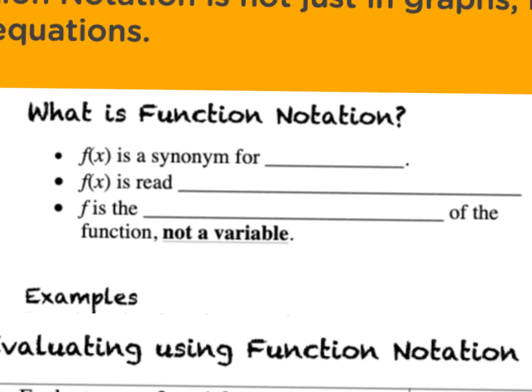F of X is another way of saying Y. A lot of the time you're used to X and Y. In function notation, F of X is another way of saying Y. If you say it out loud, you say F of X, which means that F is a function of X. It means that Y depends on X. F is simply the name of the function, not a variable.